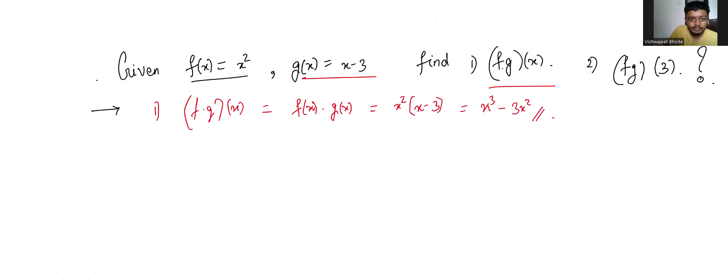Now let's do the second part. So f times g at 3 is basically f of 3 times g of 3, which is equal to 3 squared times 3 minus 3, which is 9 times 0, which is 0.